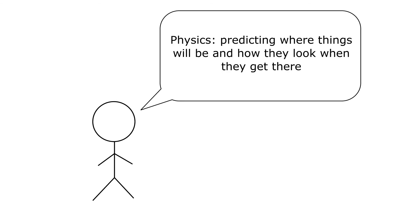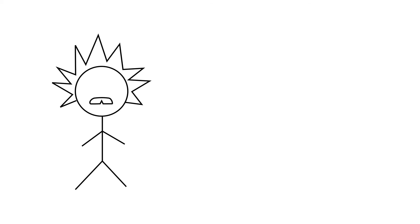Physics is the science of predicting where things will be and how they will look when they get there. So in short, a physicist is someone who tries to predict the future.